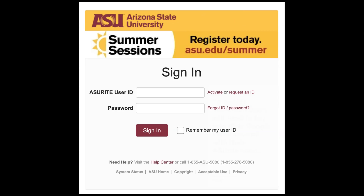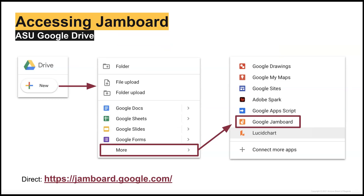To access Jamboard, users will need to log into their Google Drive account with their ASURite email address and password. Once logged into Google Drive, users will click on the New button in the top left corner. From the pop-up menu, select More at the bottom. In the next pop-up menu, click Google Jamboard to create a new Jamboard. Users can also navigate directly by putting jamboard.google.com into their browser URL and clicking Enter.